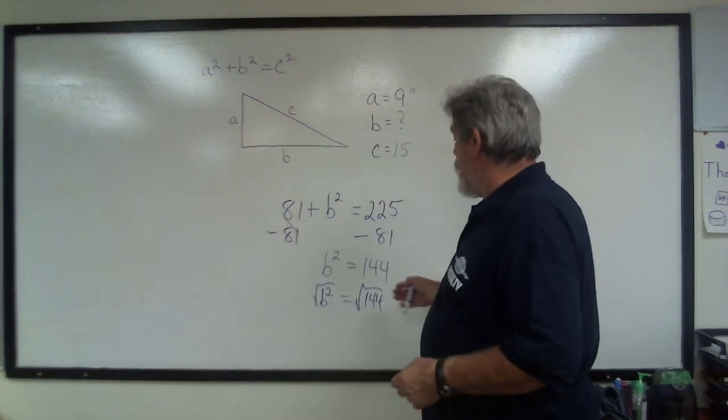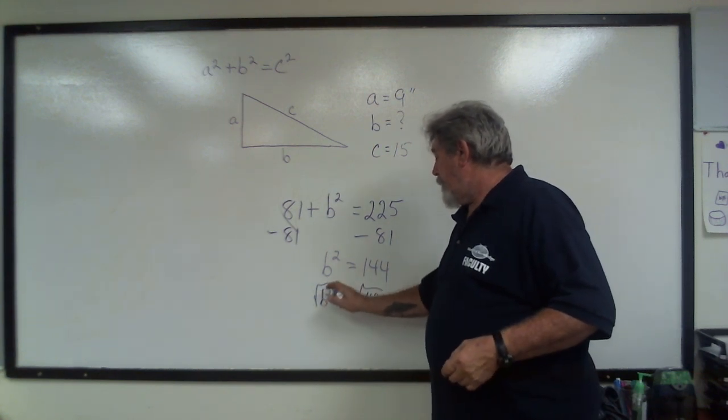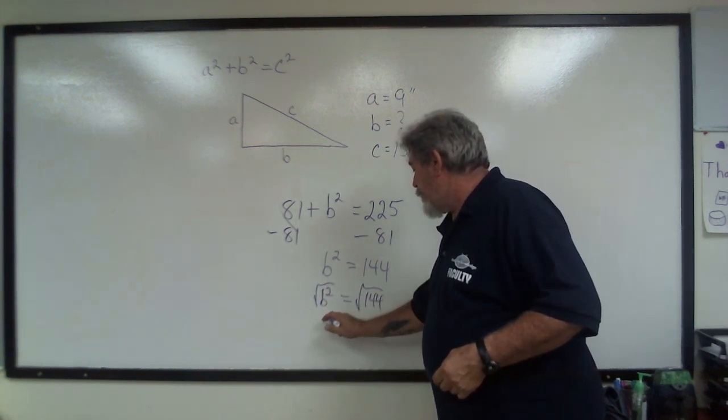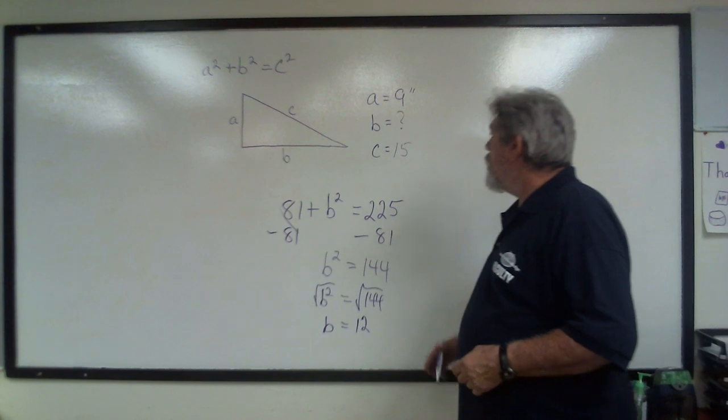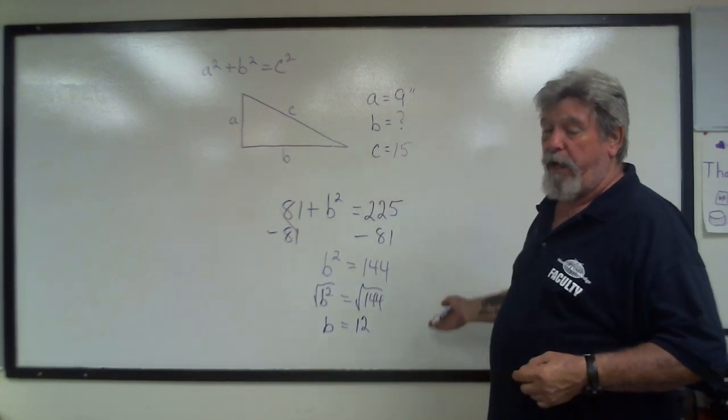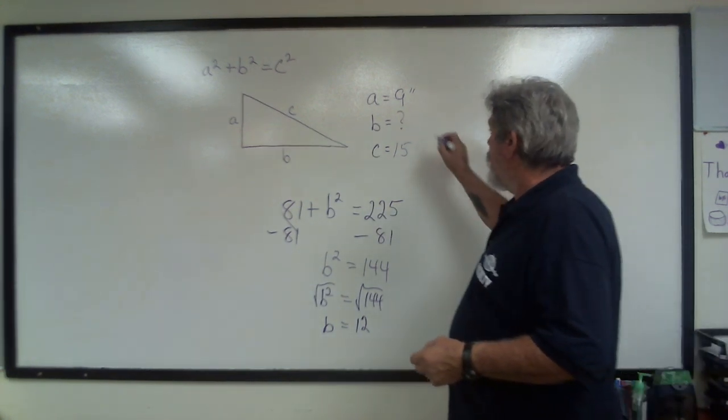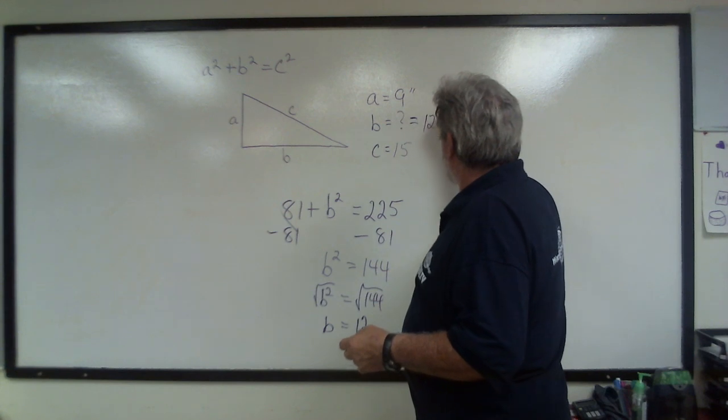And we end up with the radical and the square cancel each other out, which leaves us with just B. And the square root of 144 is 12. Same thing that we had before, so you know that it works that way too. So that's going to equal 12 inches.